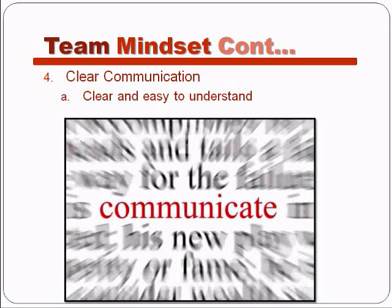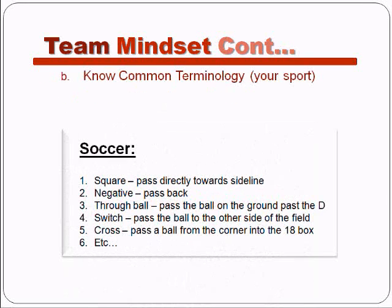There are a few basic things you can do to develop good communication on your team. First, teach your players the common terms for your sport and what they mean. Soccer has some very specific ones — 'square' means pass directly to the sideline, 'negative' is passing the ball back towards your own goal, 'through ball' is passing the ball on the ground past the defense, et cetera. In our report section, we've got all these common terminologies broken down by sport, so you can download those reports and print them out and pass them out to your team.